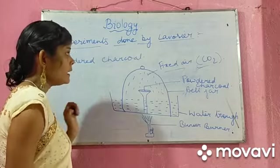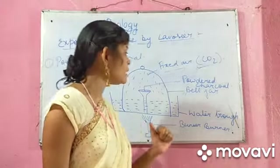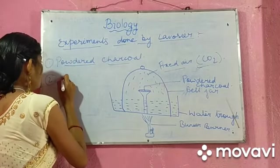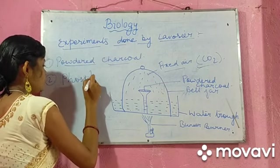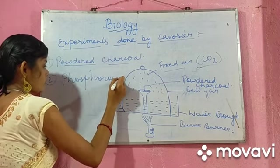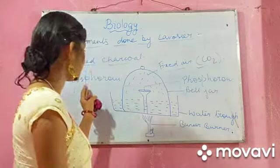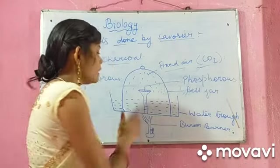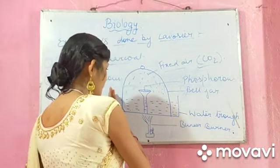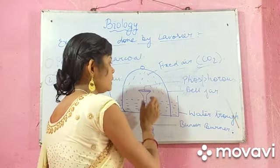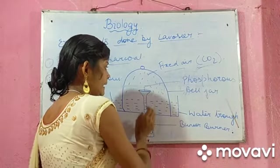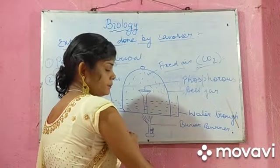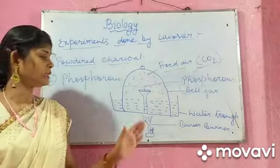In another experiment, again Lavoisier repeated the same setup, but instead of taking powdered charcoal, he took phosphorus. There was a water trough filled with water, a stand on which he put some phosphorus, covered with a bell jar. Again, he started to heat it.